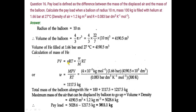n is number of moles, so we can write n = given mass divided by molecular mass. Here we want to find out the value of W, the mass of helium gas. Shifting all other quantities, the formula becomes W = mPV / RT, where m is the molecular mass of helium gas, which is 4.